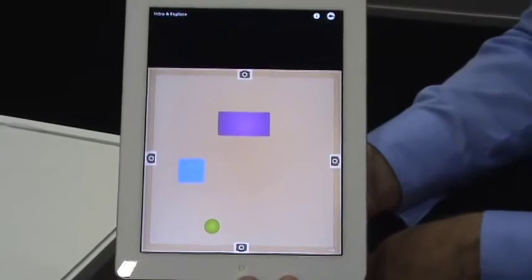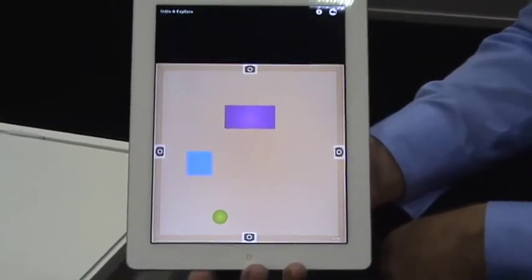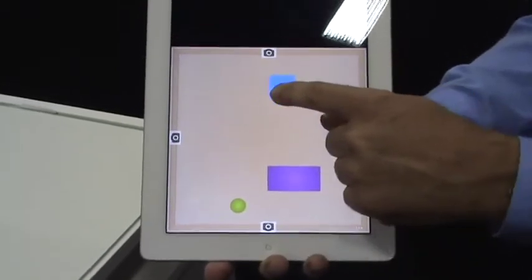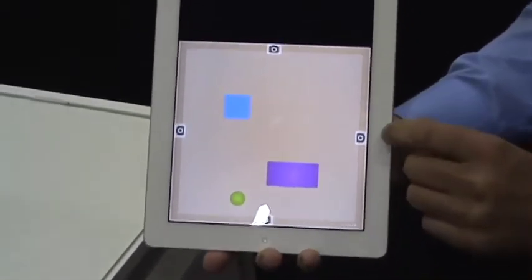So she's telling us that this is a top view of objects and to drag the objects around the screen. This is the intro and explore mode so kids can get a sense of how the tool works.